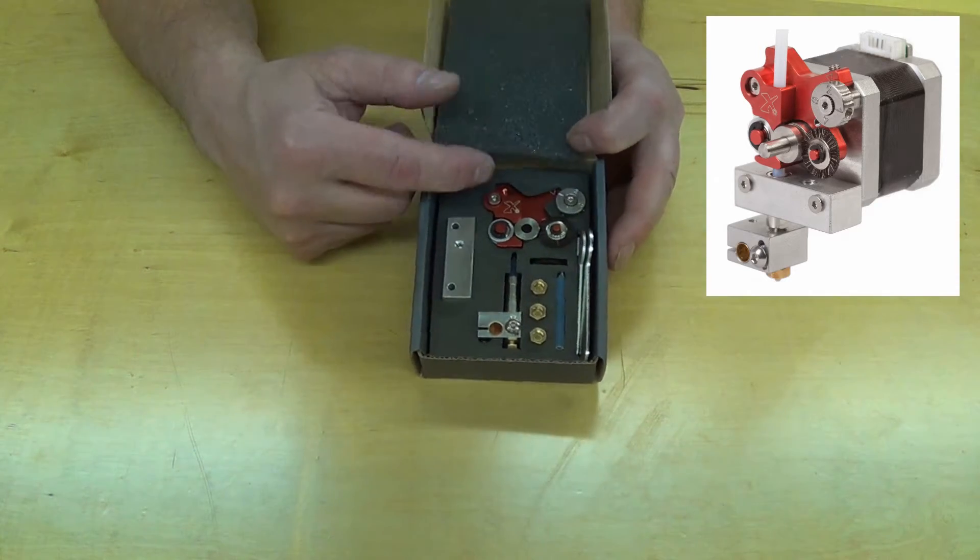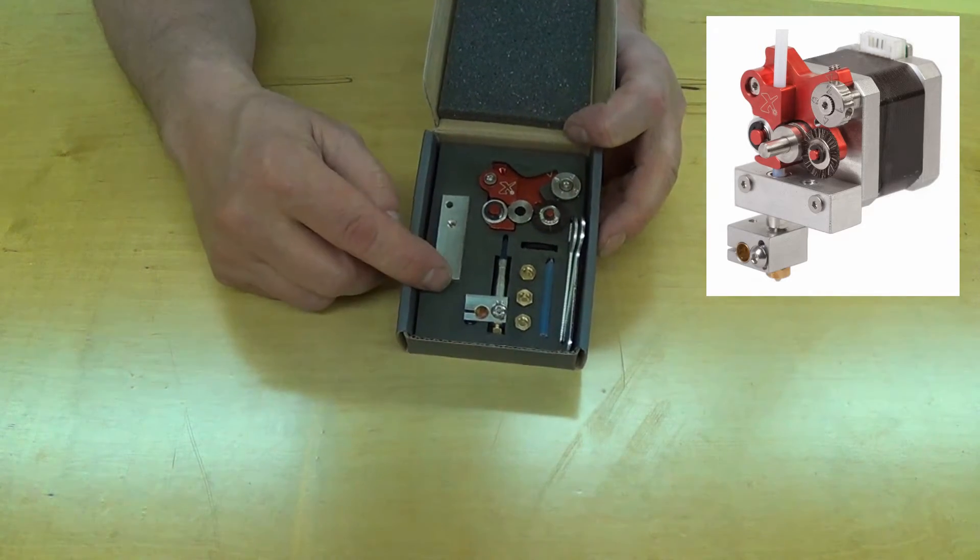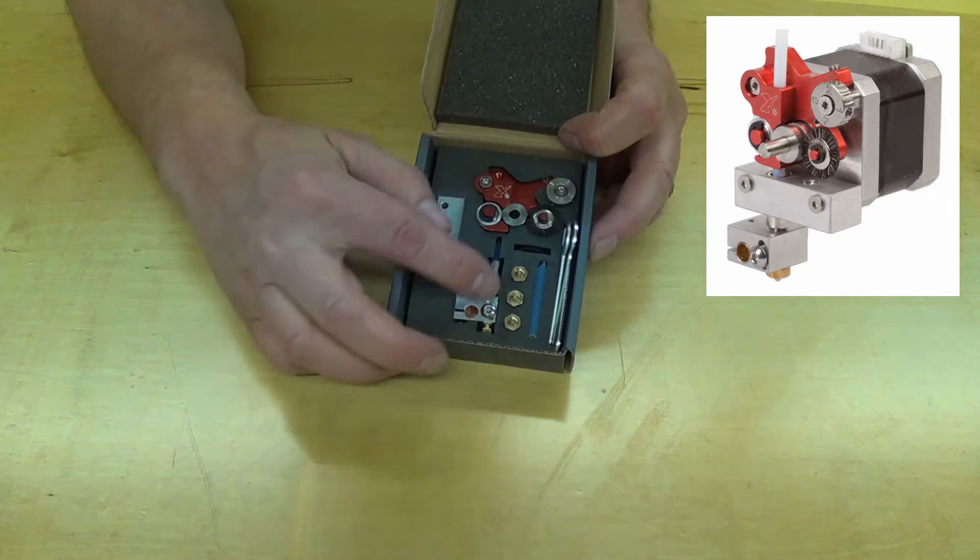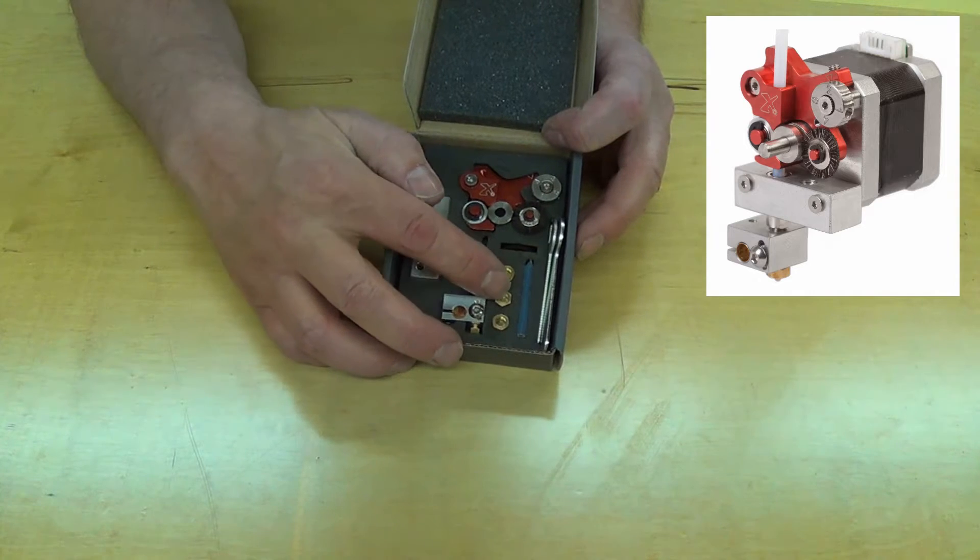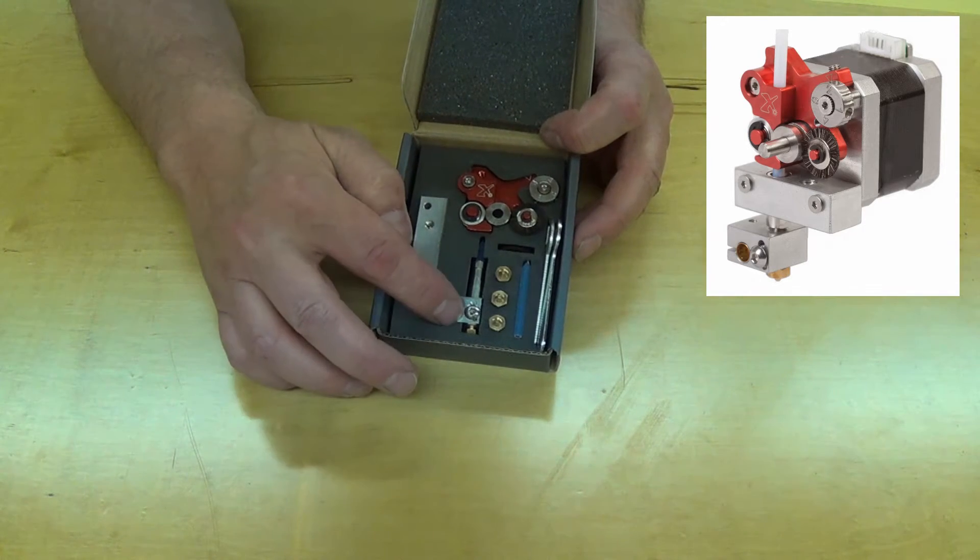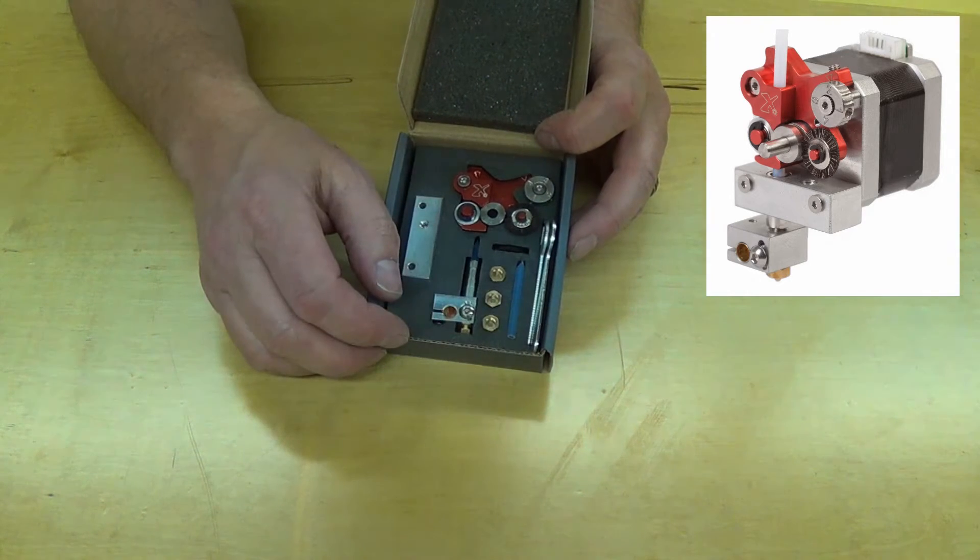You have a mounting block, heater block, different tips and nozzles: 0.2, 0.3, 0.4, and a 0.5mm nozzle.